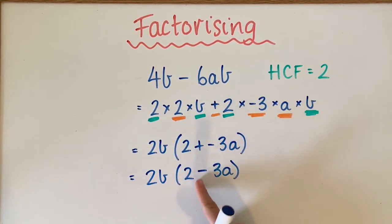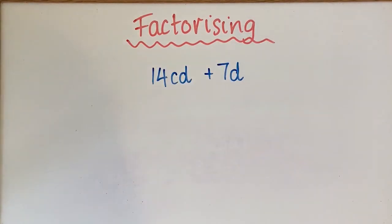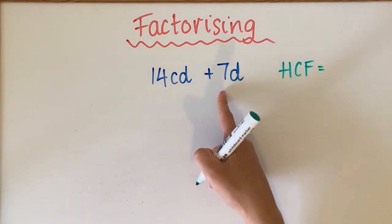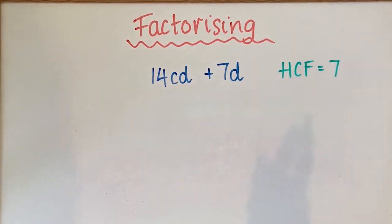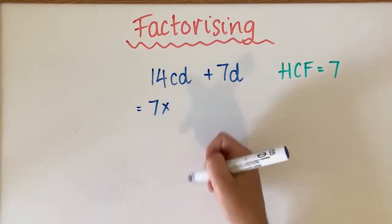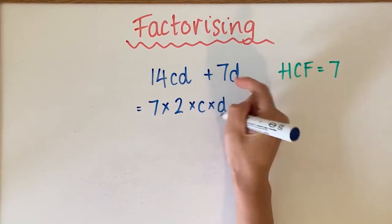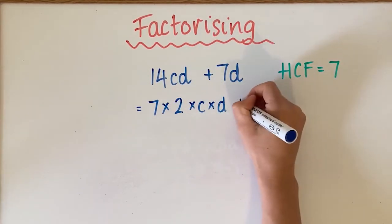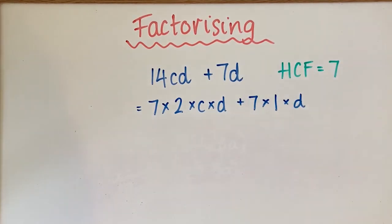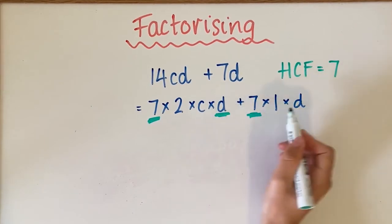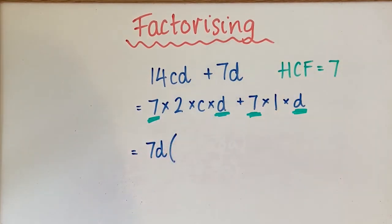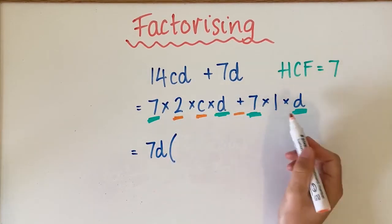Now we have 14CD plus 7D. As always, we find the highest common factor first. The biggest number that goes into 7 is 7, and it also goes into 14, so the highest common factor is 7. So 7 times 2 gives us 14, then we put the C and D on the end. For the second term, 7 times 1 gives us 7D. They both share a 7 and a D, so on the outside we write 7D, and inside the brackets we write 2C plus 1.